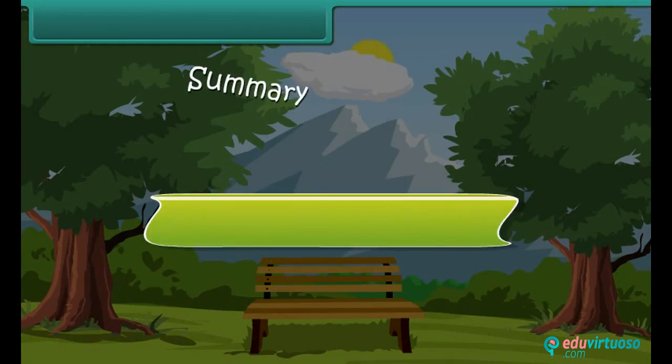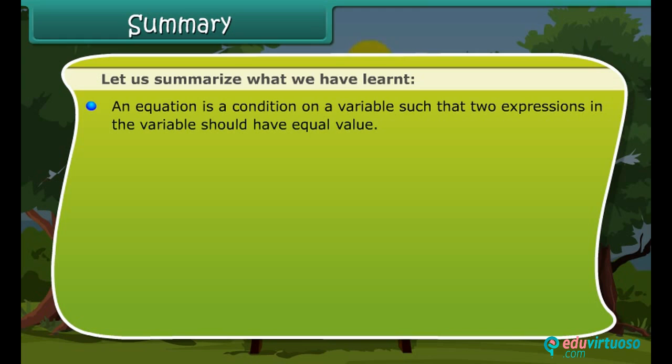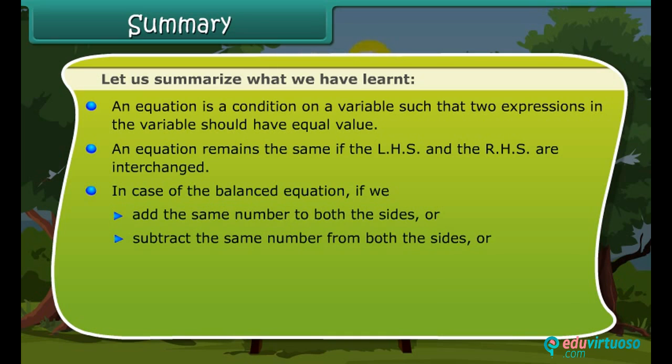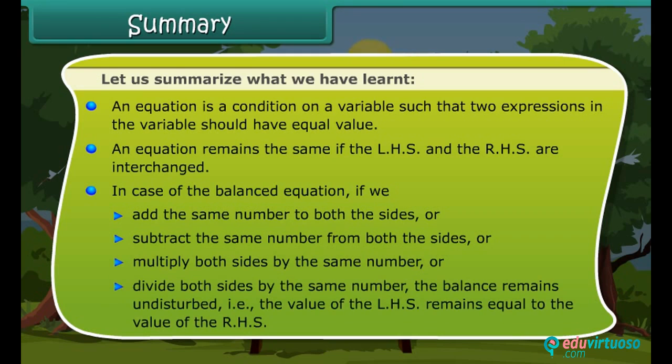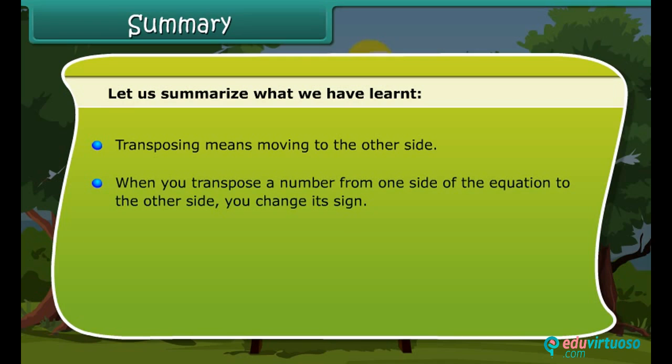Summary. Let us summarize what we have learned. An equation is a condition on a variable such that two expressions in the variable should have equal value. An equation remains the same if the LHS and the RHS are interchanged. In case of the balanced equation, if we add the same number to both the sides, or subtract the same number from both the sides, or multiply both sides by the same number, or divide both sides by the same number, the balance remains undisturbed. That is, the value of the LHS remains equal to the value of the RHS. Transposing means moving to the other side. When you transpose a number from one side of the equation to the other side, you change its sign.